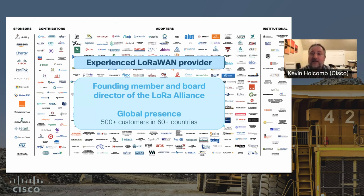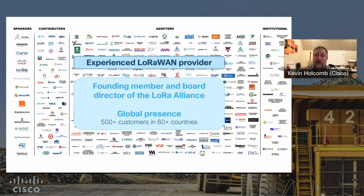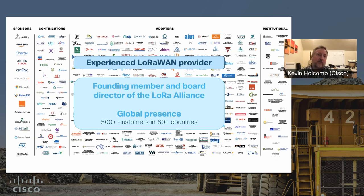Cisco has been in the LoRaWAN business for a long time. We were one of the initial members when LoRaWAN first rolled out — around 2015 or 2016. We're a founding member of the LoRa Alliance, the body that works to standardize LoRaWAN globally. Since then, we've grown to over 500 customers in over 60 countries, so we have a lot of experience deploying LoRaWAN.